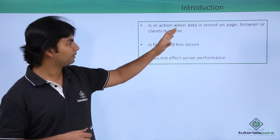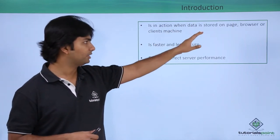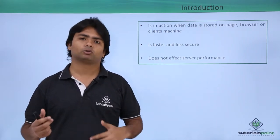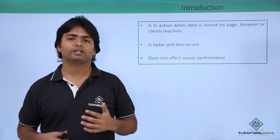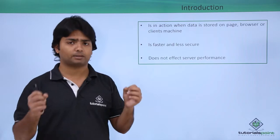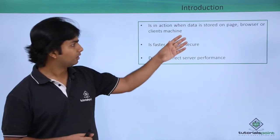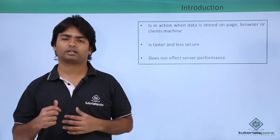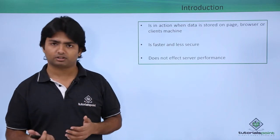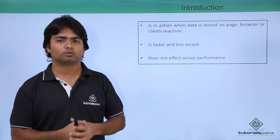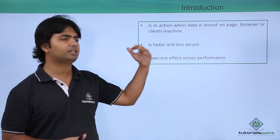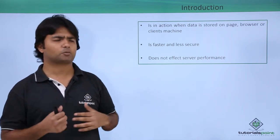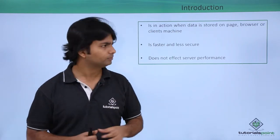When we want to store the value on the client machine, we can store the data on the page memory, in the web browser, or somewhere in the client's machine. As you can see, when the data is stored on the page — meaning in the HTML — we will try to encrypt the data and store it in the page memory itself, or in the browser, so that even if there is a round trip the values should be there, or somewhere in the client machine maybe as a file.